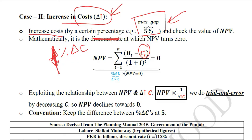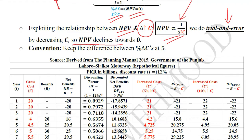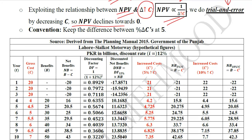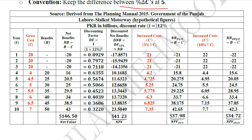When we use this new cost, the NPV will be zero, and that change in the value of cost will be the switching value of cost — just like we found the switching value of benefits. This NPV equals zero at the switching value of cost when introduced in the cost stream. We know that if costs increase they will decrease the NPV, using this inverse relationship. We have to do a little bit of trial and error so the NPV might decline towards zero, and the convention is to keep the difference up to 5%.